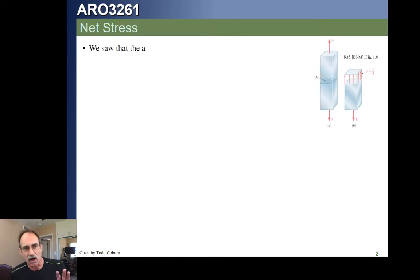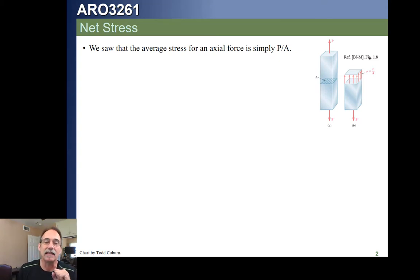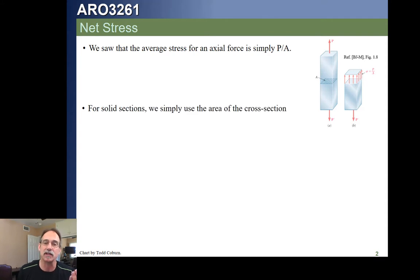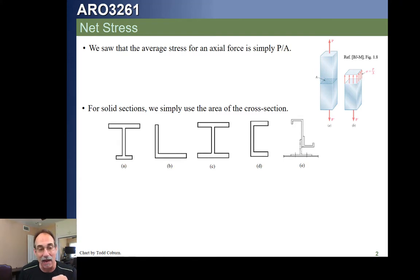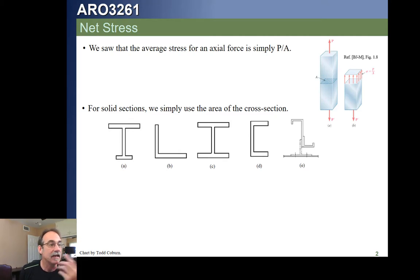We already saw that when we have a load on a member, we can calculate the stress. The stress we typically use is that average stress P over A, which assumes the load has distributed itself evenly through the material. All we need to do is calculate the area of the section at the minimum section and divide the force by the area. For sections A through E shown here, this is very straightforward.